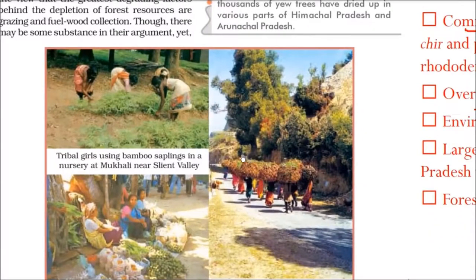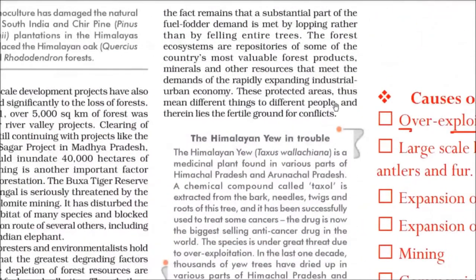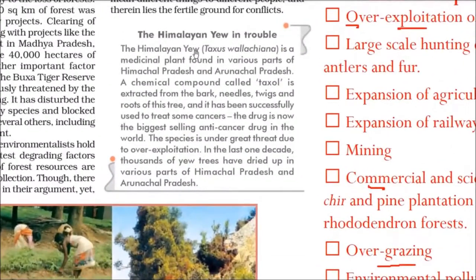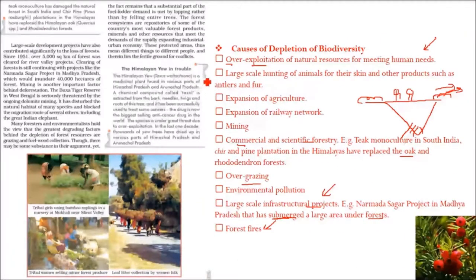Tribal women collect leaf litter and forest produce — they are not significantly responsible for forest destruction, as they only take what the trees have already shed. Someone collecting wood for fuel takes only a small amount, not the whole tree. The Himalayan yew was very important for medicinal purposes but is now almost finished.